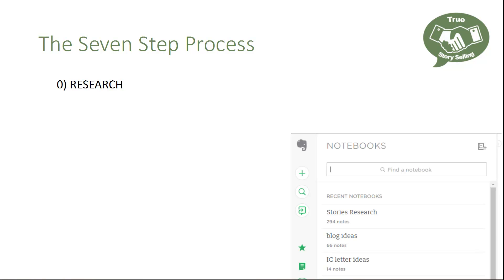The process I've adapted is to use Evernote, so all of my ideas for things I want to write about go there. In my business I write a daily email — five days a week. The key to writing at that level of frequency is to be constantly researching for ideas. I have Evernote on my computer and on my phone, and I'm always making notes. In my stories research folder I've got 294 notes of potential stories I might want to write about. I've also got a notebook for blog ideas — specific ideas for daily emails — with 66 notes in there.